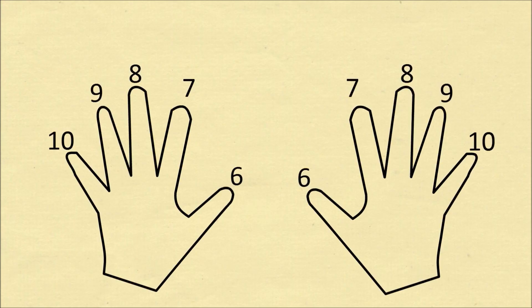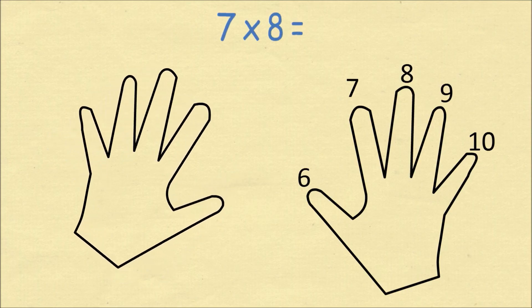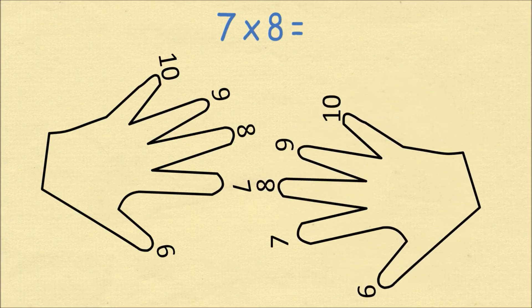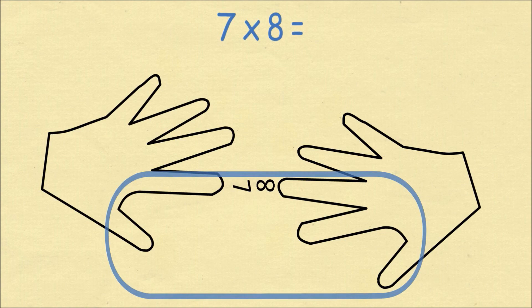The method begins by numbering the fingers on your hands 6 through 10. To do 7 times 8, we line up the finger for 7 on the left hand with the finger for 8 on the right hand. We then count the number of fingers, including the fingers which are touching, that are below the fingers which are touching. There were 5 fingers in this figure. These are the tens units, so this becomes 50.